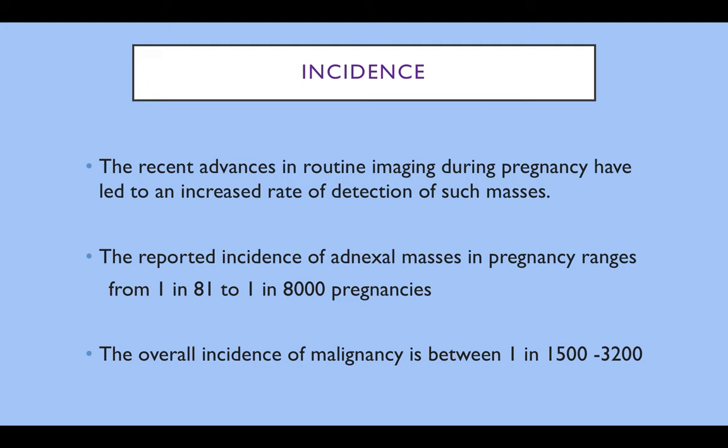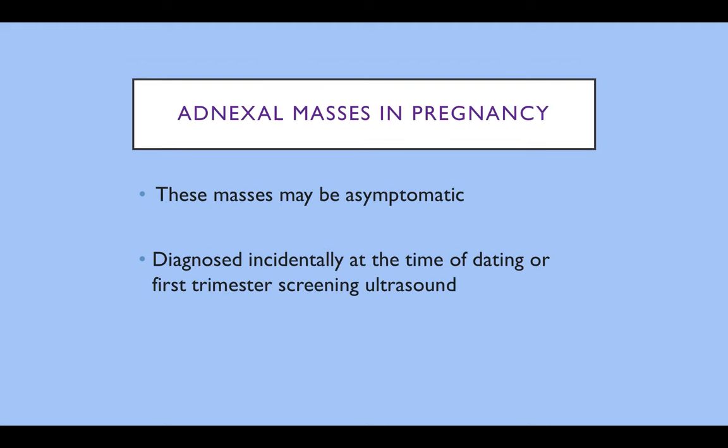Recent advances in routine imaging during pregnancy have led to an increase in the rate of detection of such masses. The reported incidence of adnexal masses in pregnancy ranges from 1 in 81 to 1 in 8,000 pregnancies, and the overall incidence of malignancy is between 1 in 1,500 to 3,200. Adnexal masses may be asymptomatic and just picked up on a routine scan, particularly as we're now encouraged to look in the adnexa for previously undiagnosed cysts or masses.